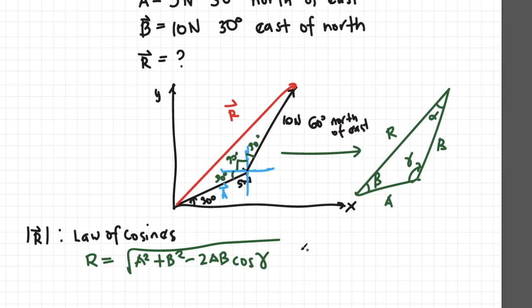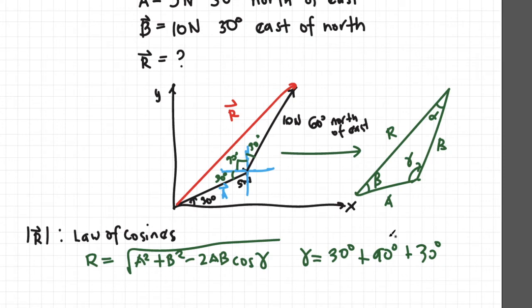Basically, this tells us that gamma equals 30 degrees plus 90 degrees plus 30 degrees. So we can calculate the length of R.